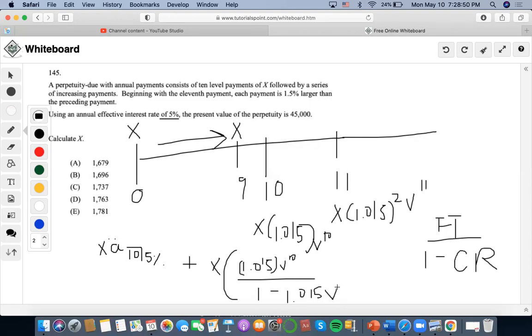Now, once we have that figured out, we want to set these present values equal to 45,000. So we're going to first solve this one. I'm going to break this to an annuity. That's going to be 1.015 V as the payment, 10 as the number of years, 5 as the interest rate, 0 as the future value. Compute present value is going to be 8.11X.